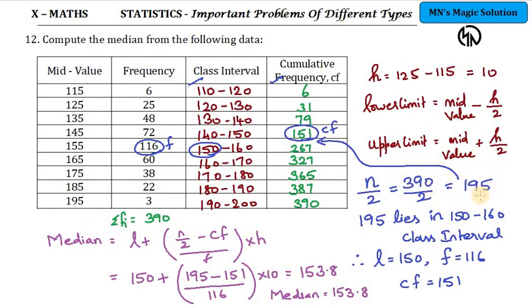So, 195. If you see, it will lie in the class interval 150 to 160. 151st person to the 267th person, they will come in this category which is this 150 to 160 range. Therefore, 195th person comes in this category. So, we have identified 150 to 160 as our median class. Its lower limit 150 is L. Its frequency 116 is F. And, the previous class cumulative frequency is CF. So, these details, when we substitute in our usual median formula, you get the answer as 153.8. The median is this.